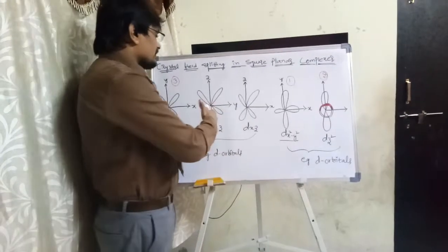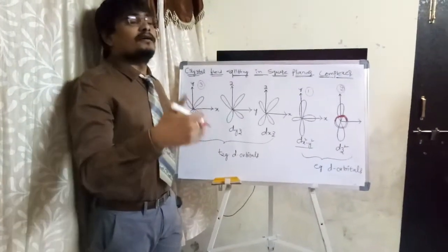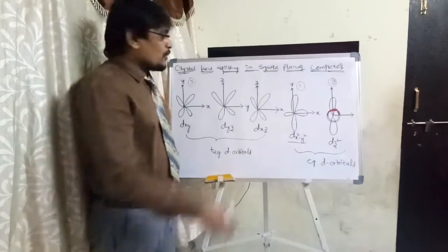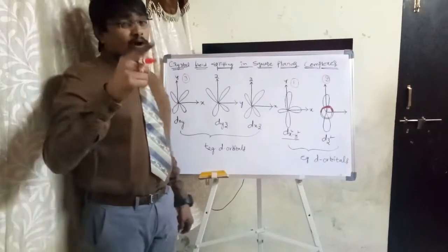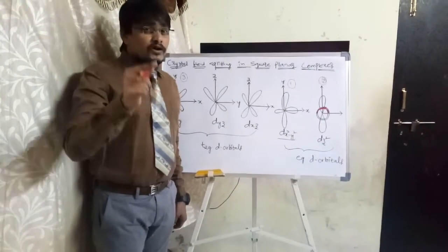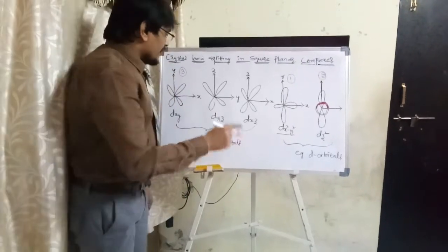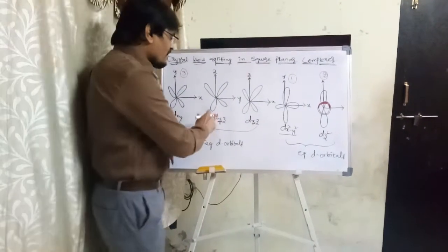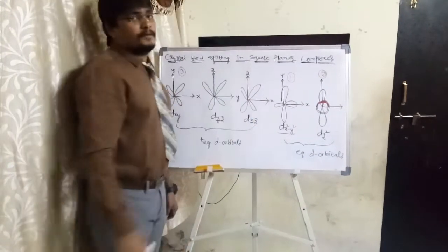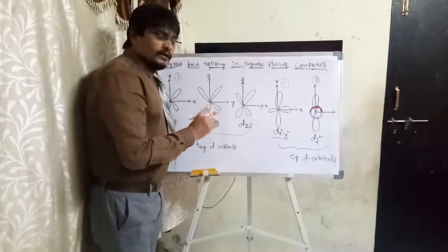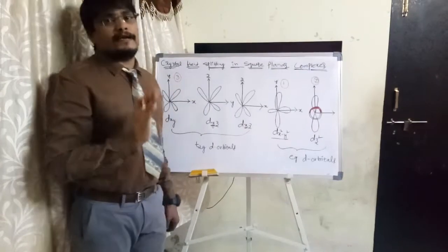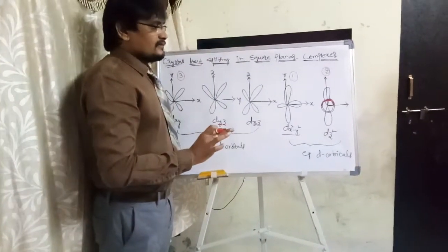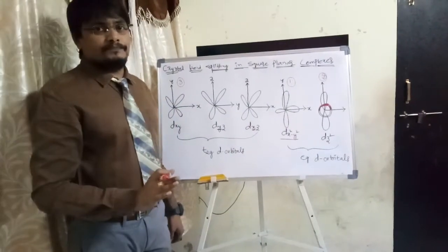Coming to the two remaining d orbitals — dyz and dxz — both will occupy the same energy level. In dyz, the y-axis is involved, and in dxz, the x-axis is involved. Since both have one of the x or y axes as a component, they experience the same degree of repulsion from the approaching ligands, and therefore occupy the same, lowest energy level.